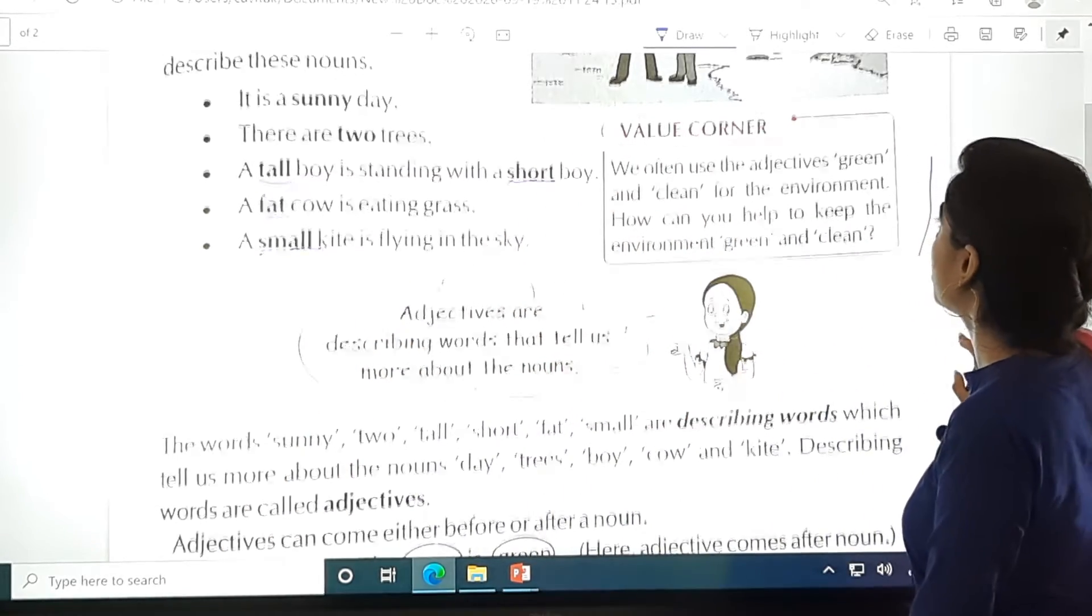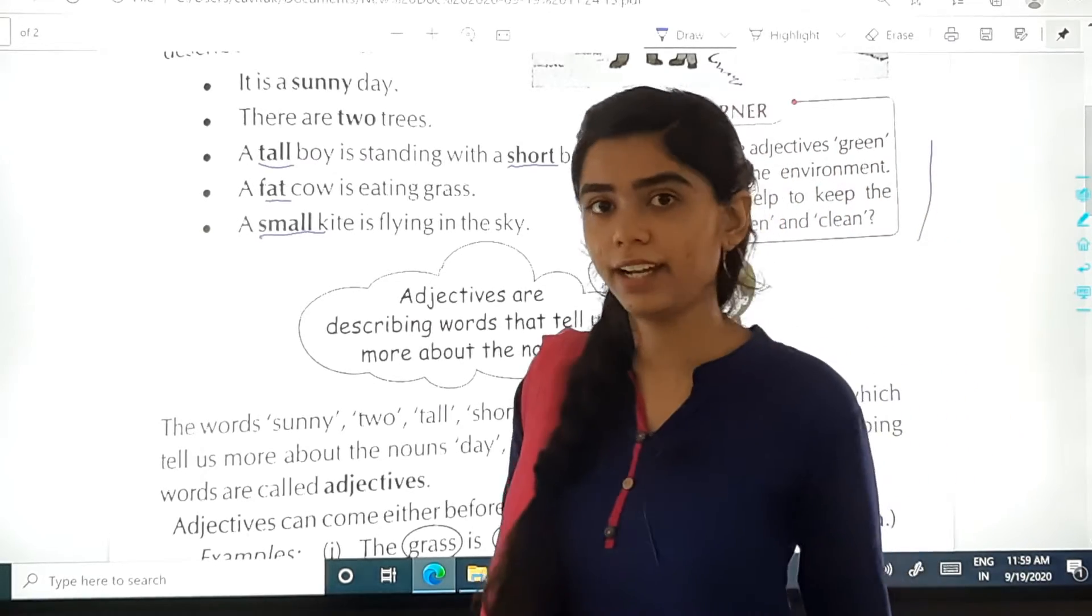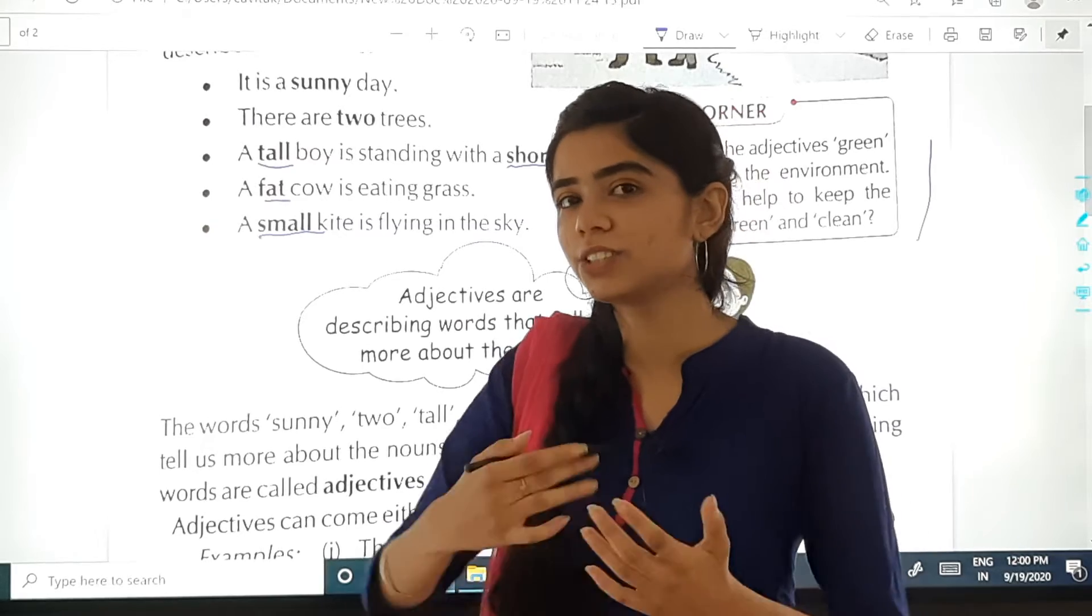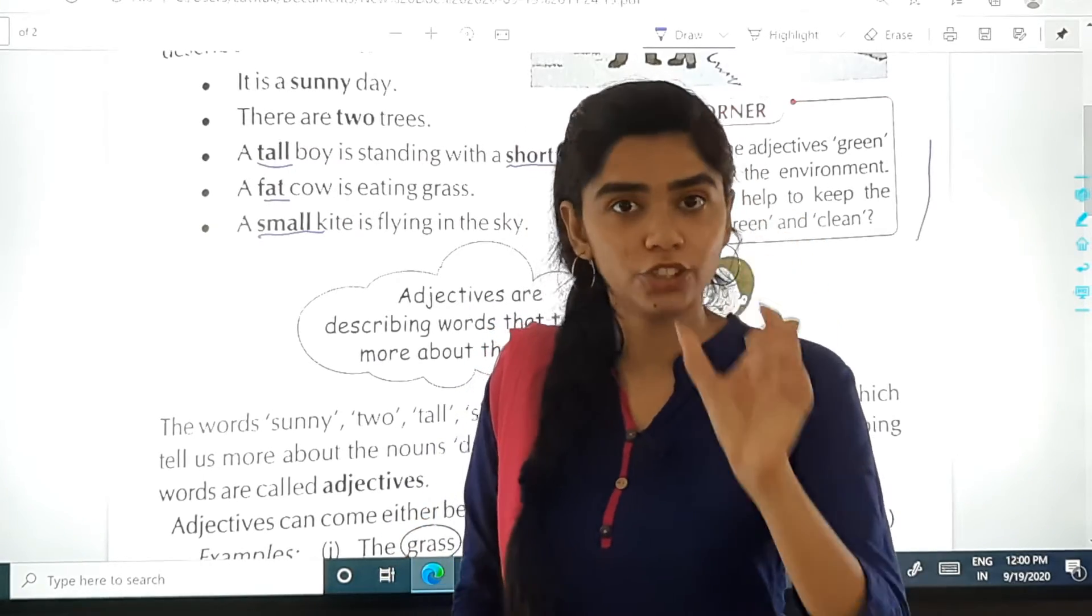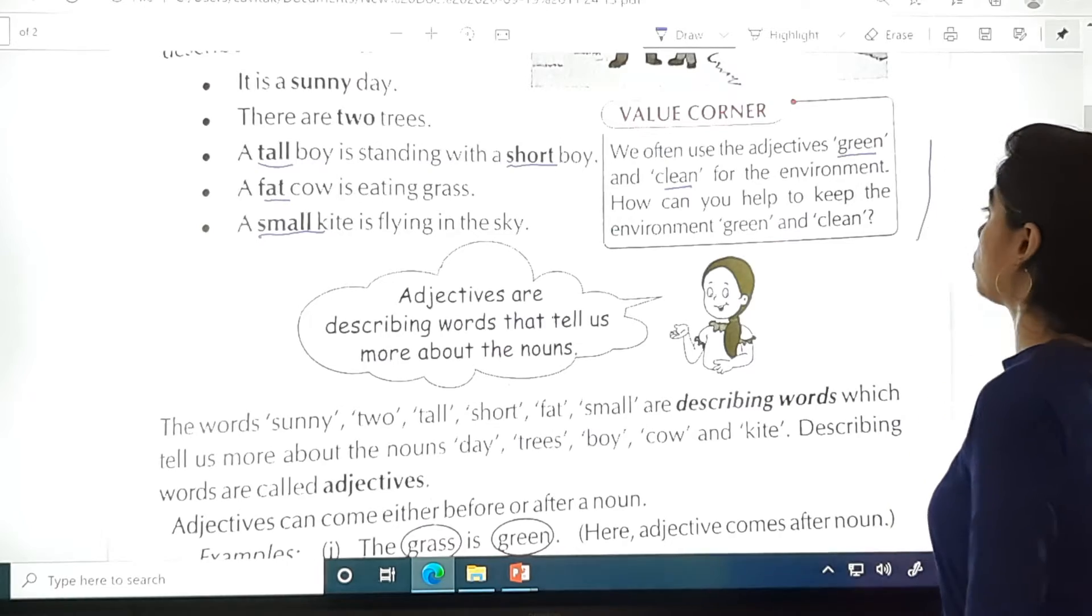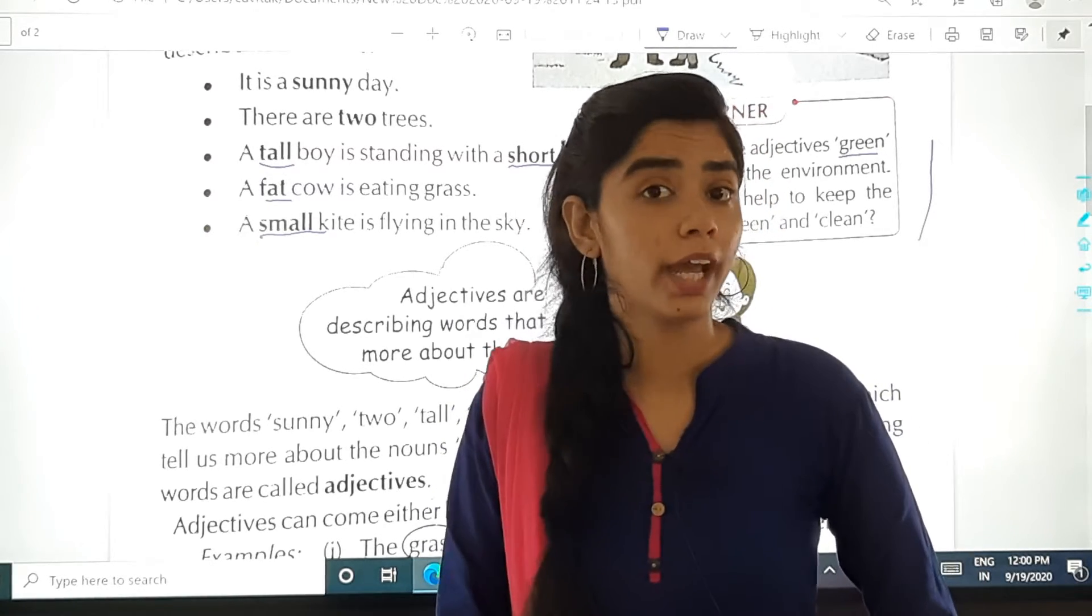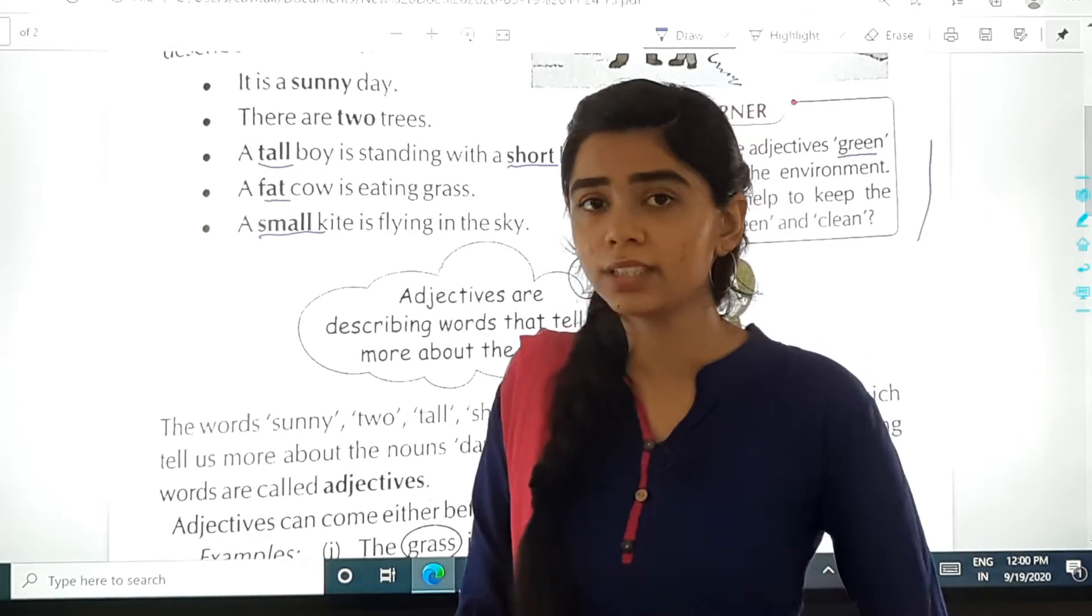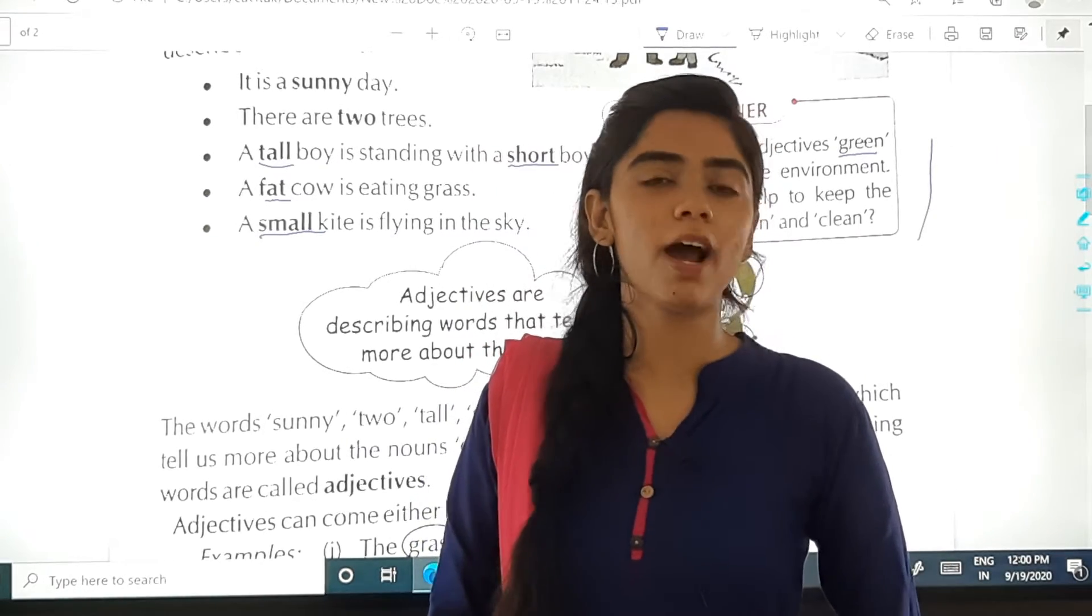Now value. We often use the adjectives green and clean for the environment. So generally what we say? We say that our environment is green and clean. We should keep our surroundings clean. So our adjectives are green and clean. Now you tell me, how can you help to keep the environment green and clean? We have discussed this in many subjects. So we can keep our surroundings clean by maintaining cleanliness, by keeping dustbins, by not throwing garbage here and there. So in these ways we can keep our surroundings clean.